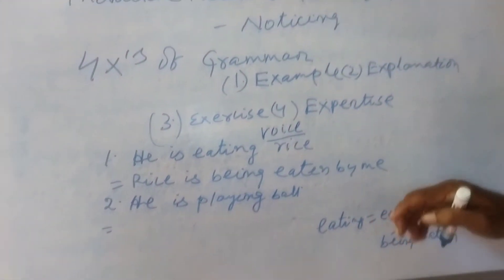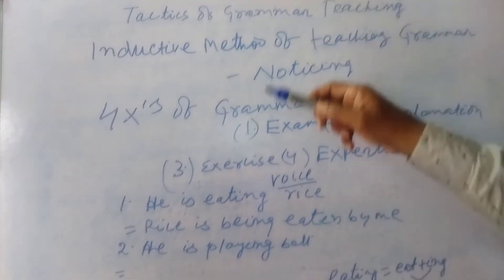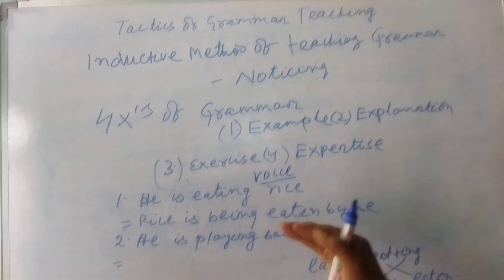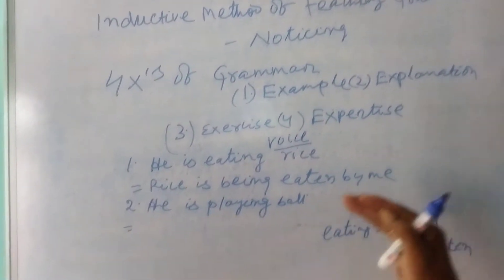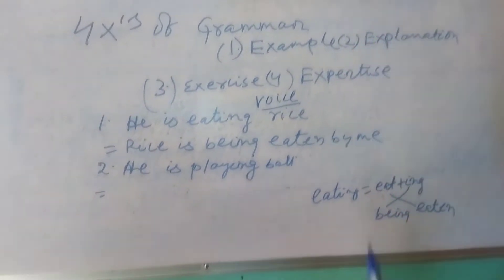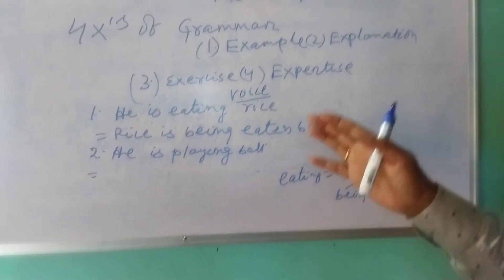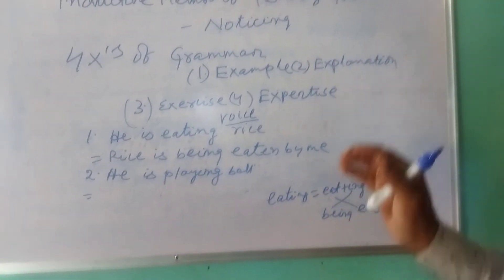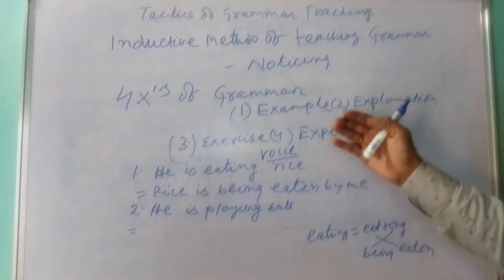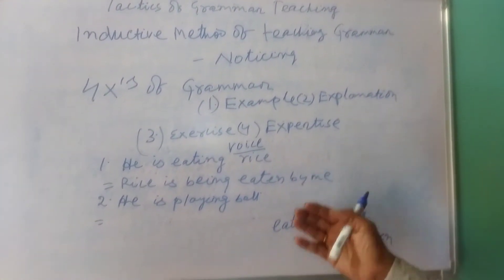After doing this, you go to the exercise phase — give ten or five questions of a similar pattern: 'He is eating rice,' 'He is teaching English,' 'He is writing Hindi,' 'He is selling vegetables.' Then you will see that one hundred percent the students will do the answers. Then what will happen? They will develop their expertise. When the present continuous tense is complete, come to another form.